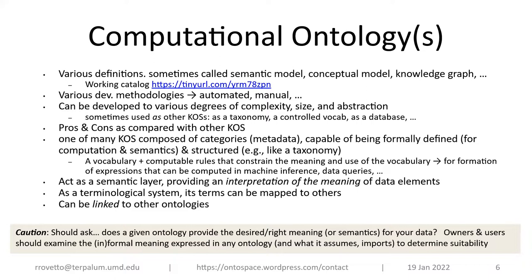An ontology can be used as another type of knowledge organization system — as a taxonomy or even as a database, depending on the tool. An ontology is composed of categories that can be formally defined and structured, allowing you to create computable expressions for inference and data queries. It can be linked and act as a semantic layer. Importantly, when considering use or creation of an ontology, it's essential to ask whether it provides the desired meaning or semantics for your data. The data owners and creators are probably the most suited to assign that semantic content.